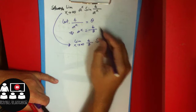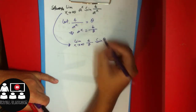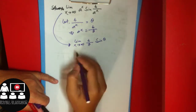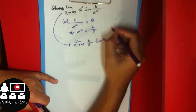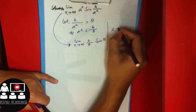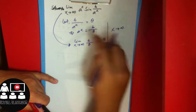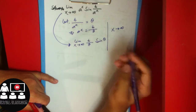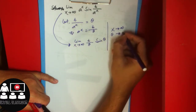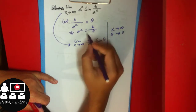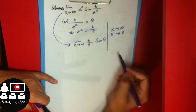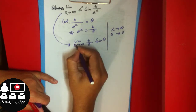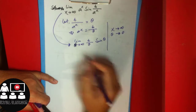As x approaches infinity, using this substitution, theta approaches zero. When x goes to infinity, theta goes to zero. So both the exit and theta over the expression approach zero. The limit with the variable change gives us theta over the expression going to zero.